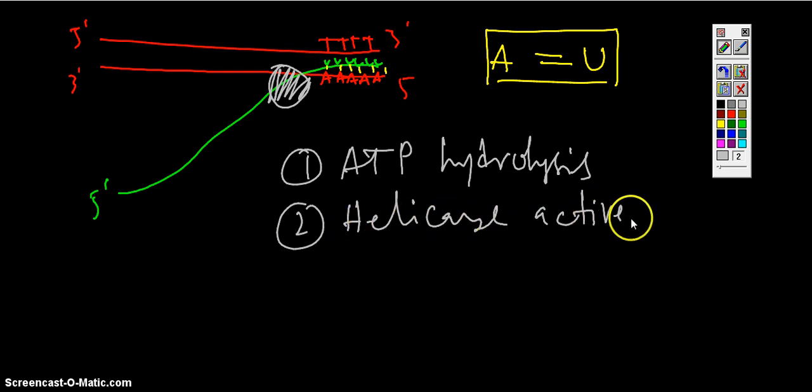Now what happens when this protein is bound somewhere here downstream, it moves towards the RNA-DNA hybridization region by the process of translocation where this ATP is needed. So with the ATP hydrolysis it translocates up to this region.